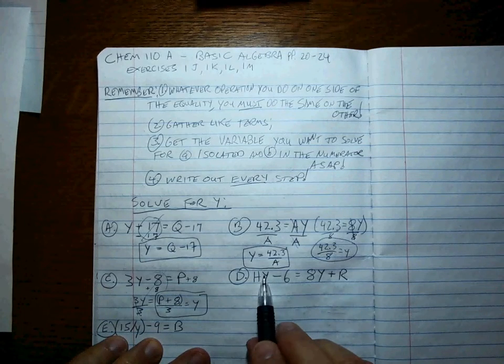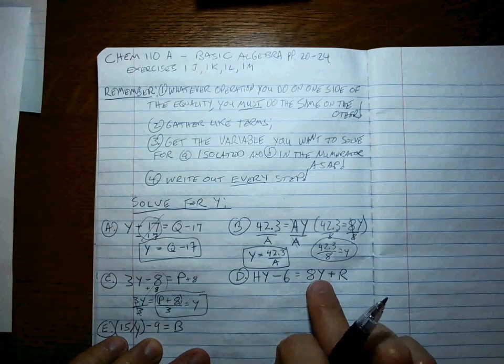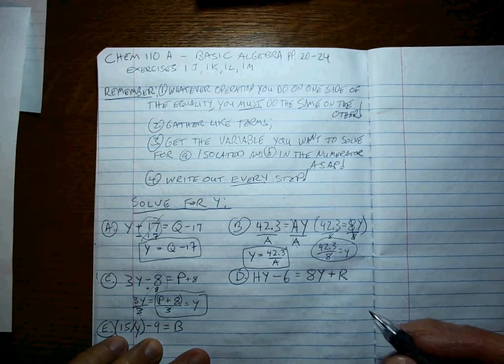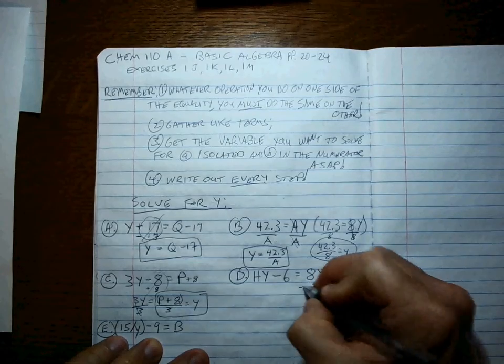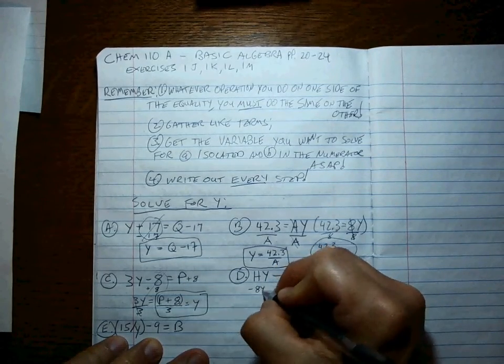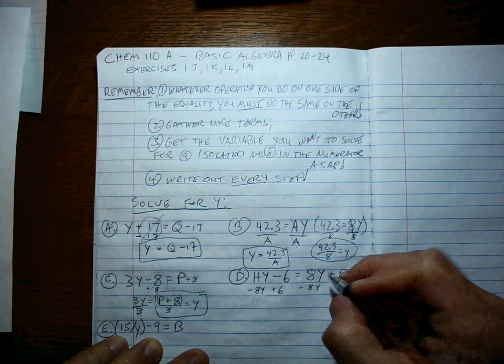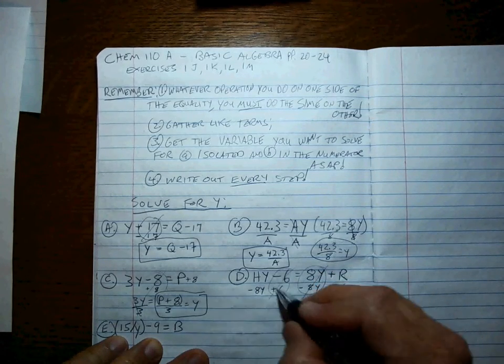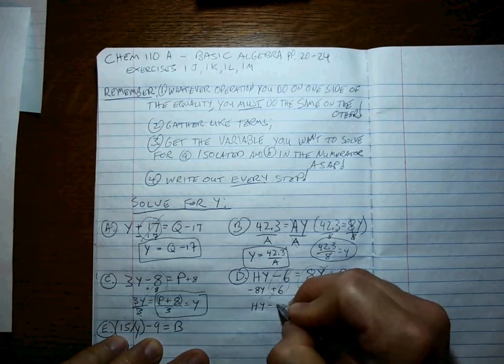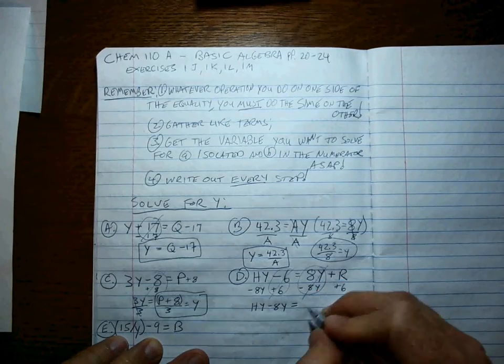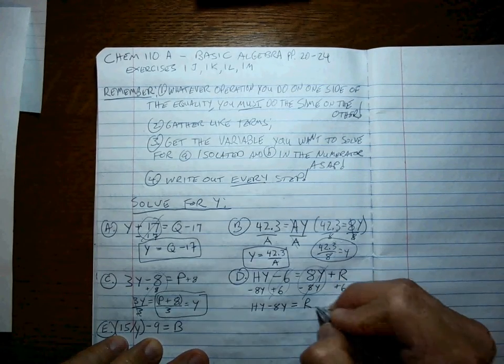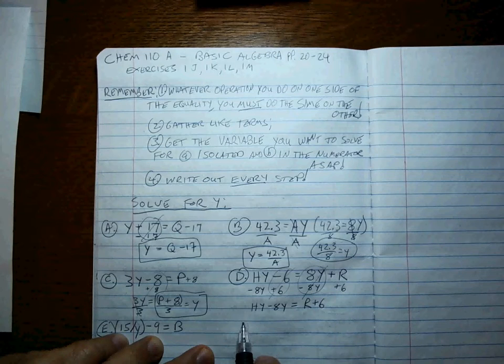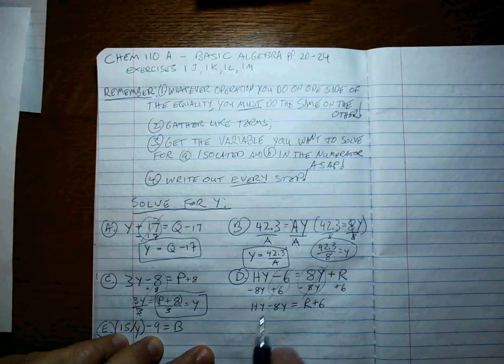Okay, let's try this guy. We've got Y's on this side and Y's on that side. So let's gather all the Y's on one side and then gather all the non-Y's on the other. Does it matter which side? I'm going to, well, let's subtract 8Y from both sides and let's add 6 to both sides. So that ended up being 0 and that ended up being 0. So what are you left with? HY minus 8Y on this side of the equality. On this side it was R plus 6. Okay, so now we're going to pull out the variable. Do the anti-distributive property. You'll see what I mean after we go through.